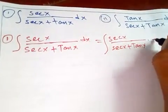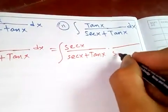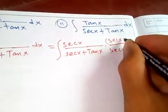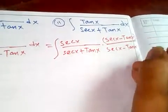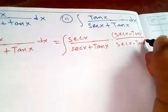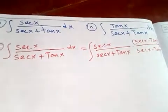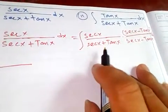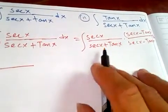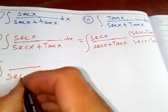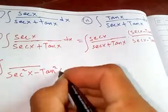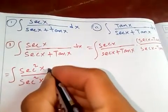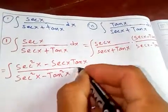Since the denominator is positive, we multiply by the negative conjugate: secant of x minus tangent of x over secant of x minus tangent of x. The denominator becomes secant x plus tangent x times secant x minus tangent x, which is the a plus b times a minus b form, giving us a squared minus b squared, i.e., secant squared x minus tangent squared x. Multiplying out the numerator gives secant squared x minus secant x tangent x.